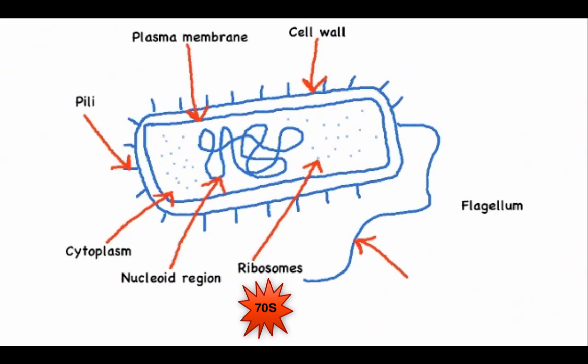The cell wall is around the outside. The pili are the short hair-like appendages, and the flagellum is the long appendage.